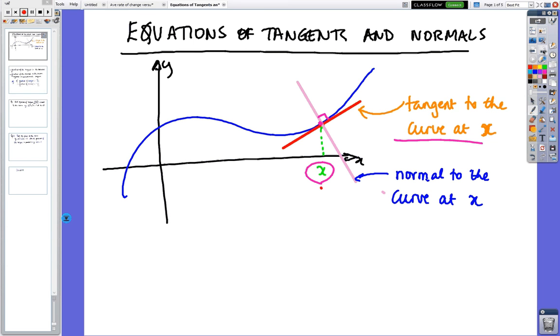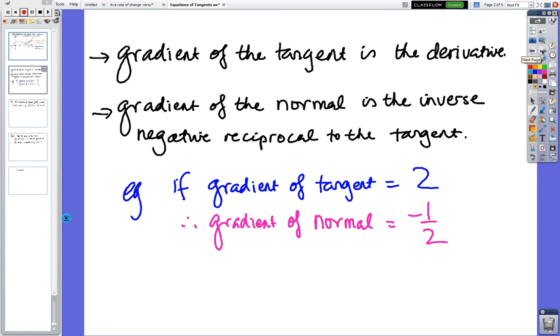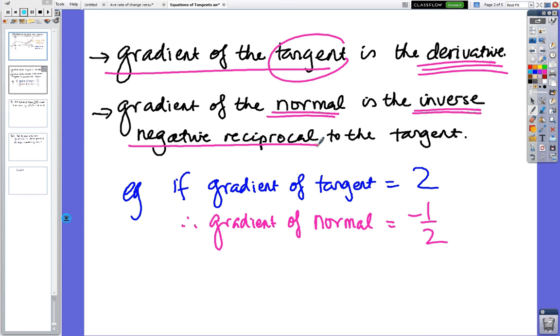Okay, so we have found that the gradient of the tangent is the derivative that we've been finding, and to find the normal, we've still got to find the tangent, and then what we do is we take what's called the inverse negative reciprocal. So what happens is, like for instance if the gradient of the tangent is 2, then you turn 2 upside down into a half, and then turn it to the opposite sign. So like for instance if the gradient of the tangent was negative 3 quarters, then the gradient of the normal would be positive 4 thirds. So you turn it upside down, reciprocate it, and then change the sign.